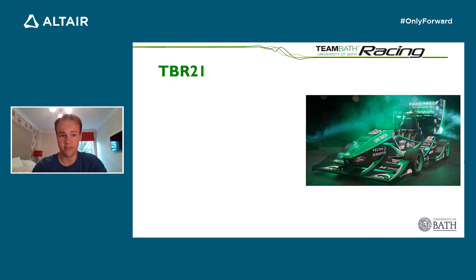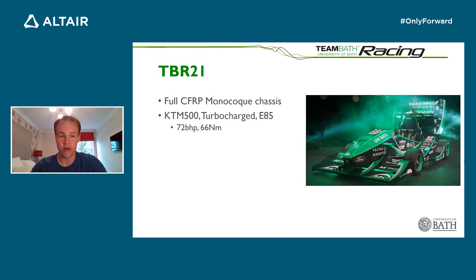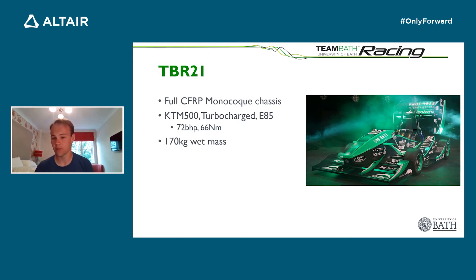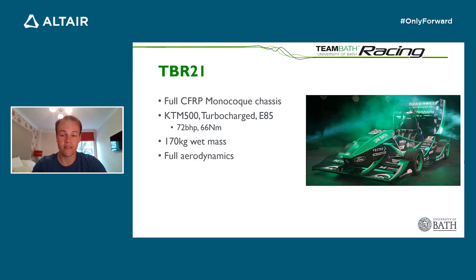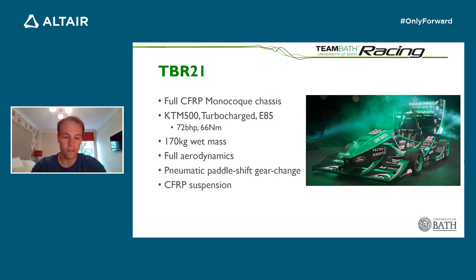Our latest car is called TBR21, and we're competing with it at Silverstone at the end of July this summer. A few highlights: it features a full carbon fibre reinforced monocoque chassis, very similar to what's used in Formula One. We run a KTM 500 motorbike engine with our own added turbocharger running on E85 fuel, producing 72 brake horsepower and around 66 newton metres of torque. The car weighs 170 kilos with all fluids and fuel on board, giving a power-to-weight ratio between a Ferrari 458 and a Bugatti Veyron. We also run a full aerodynamics package — front wing, rear wing, floor, diffuser — a pneumatic paddle shift gear shift system, and carbon fibre suspension.